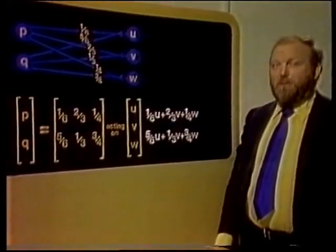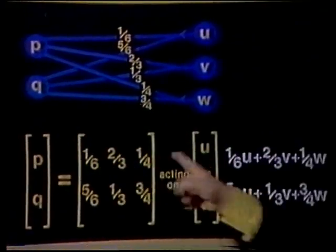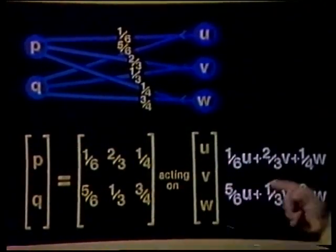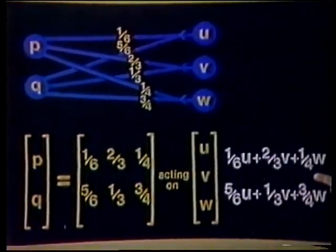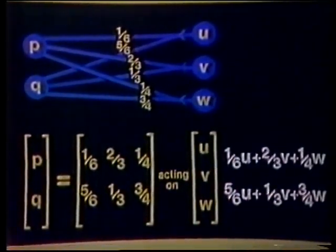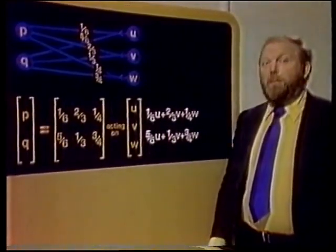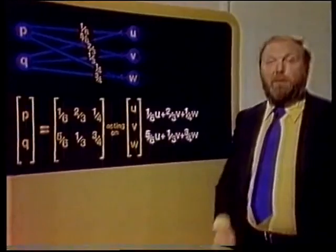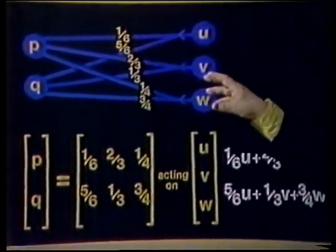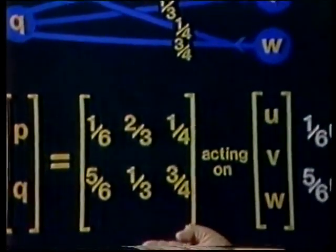Row acting on column just means multiply the corresponding elements in the row and the column, and add the results. We have the first times the first, and the second times the second, plus the third times the third, to give the value of P. In the same way the second row acts on the column U, V, W to give the value of Q. Matrix acting on column means take each row of the matrix in turn and act with it upon the column. And that exactly mimics or models the action of a network, and it can work for any network, no matter how many inputs or outputs, because we can always set up the matrix that describes it.